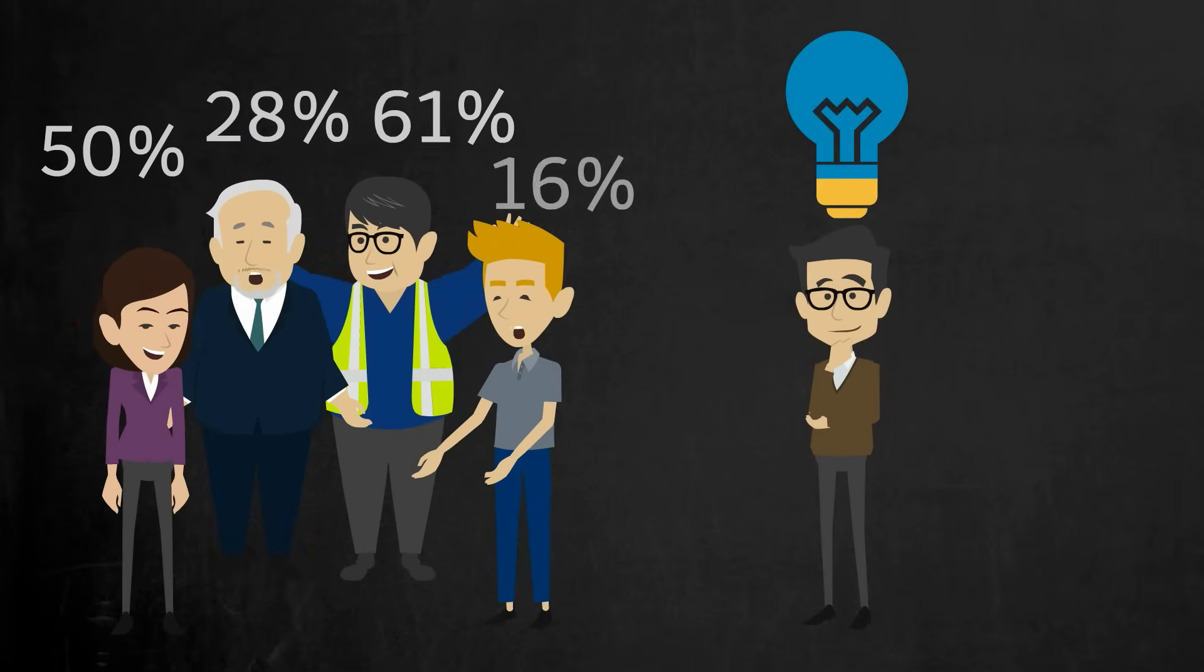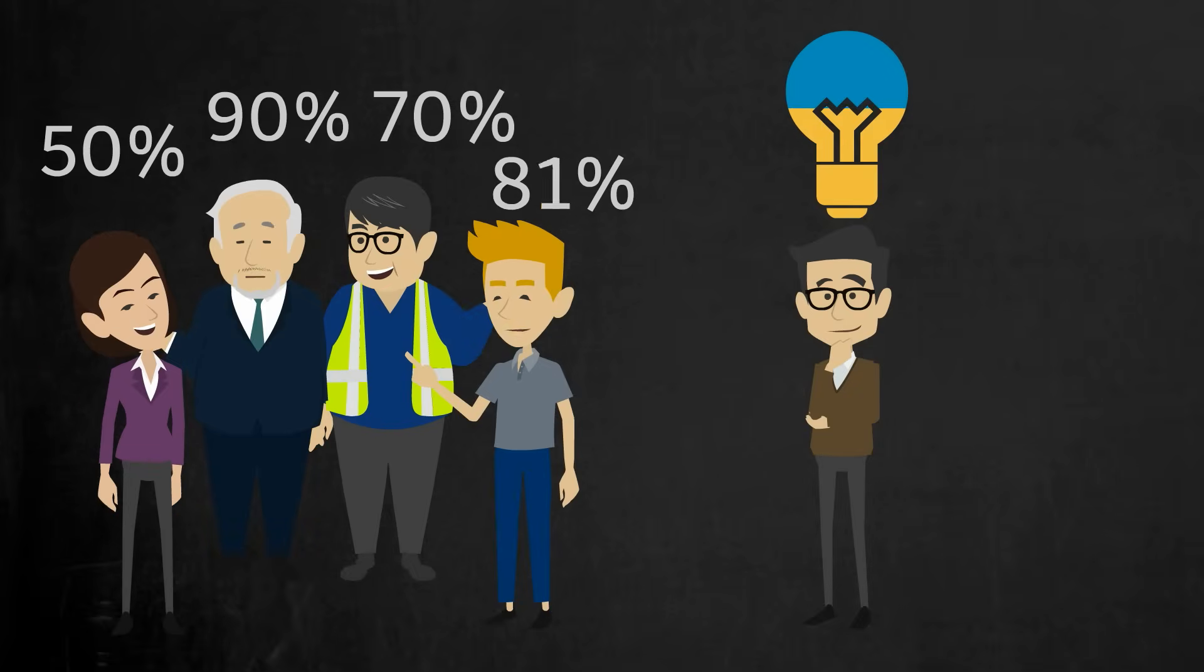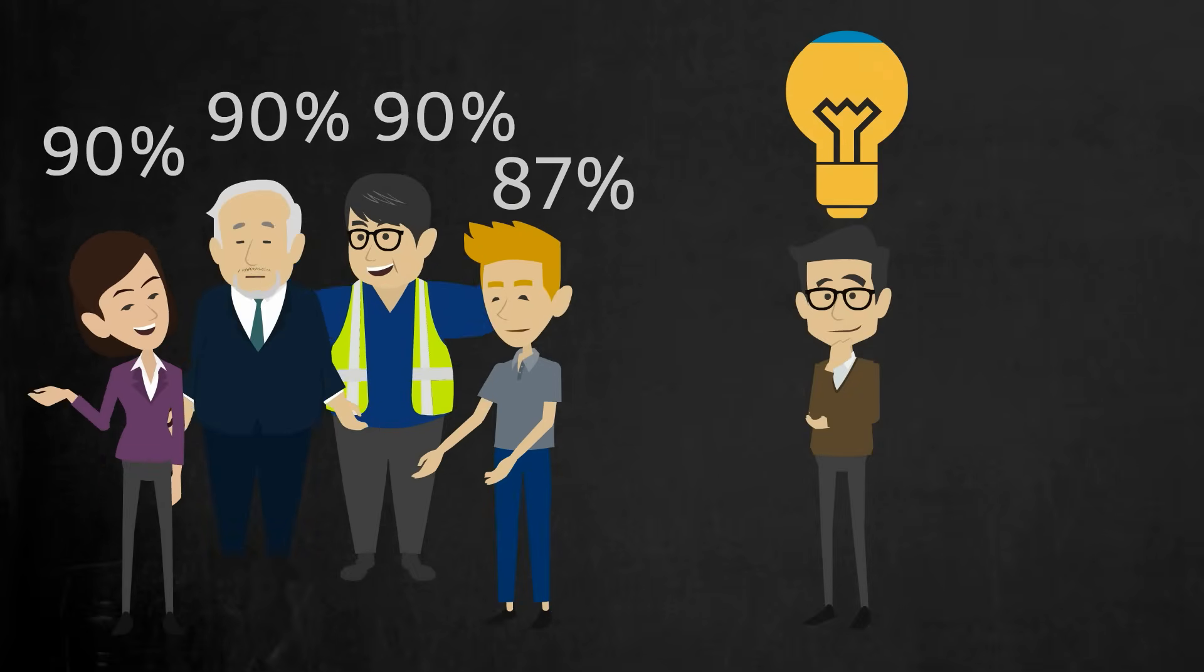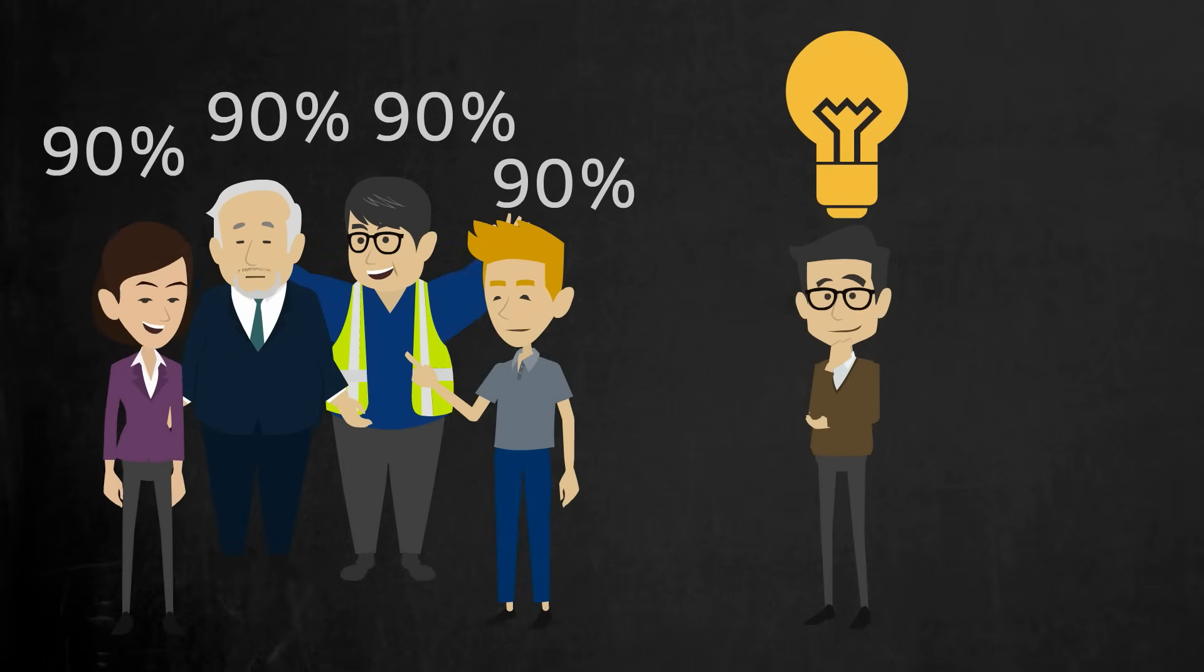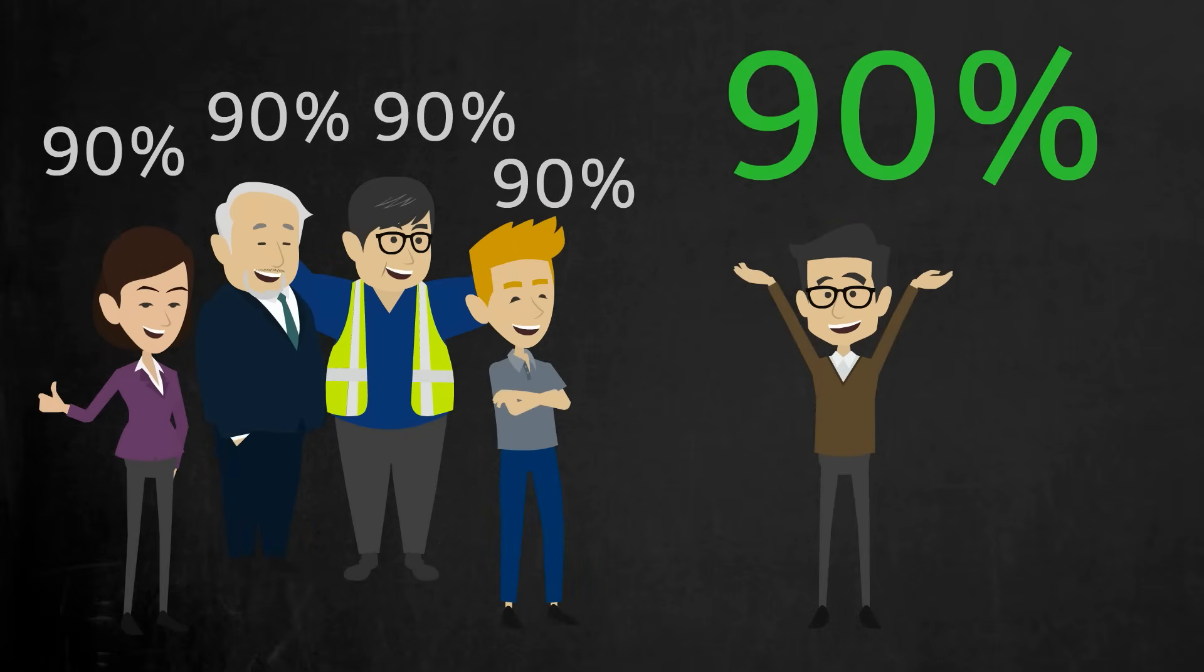With a good facilitator to guide the discussion, a team can understand what needs to happen for a consequence to occur and the probabilities associated with each step. This will bring them to a realistic probability assessment, which can be used to evaluate the risk.